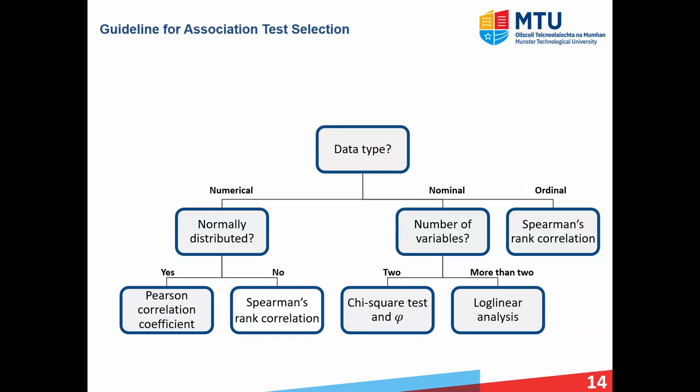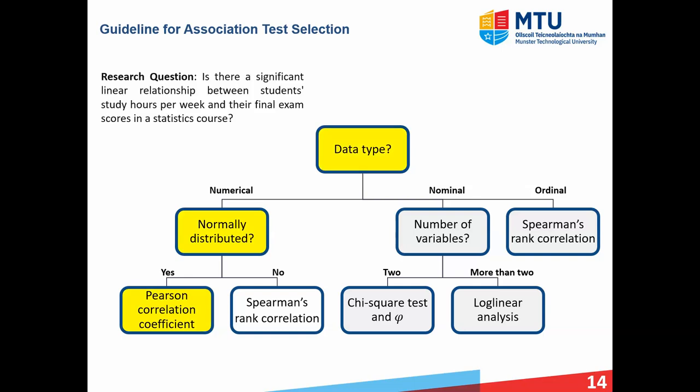Applying the association guidelines to an example: checking if there is a significant linear relationship between students' study hours per week and their final exam scores. The data type is numerical — exam scores and study hours. Assuming it is normally distributed, we calculate the Pearson correlation coefficient, which measures the strength of the linear relationship between those two variables.